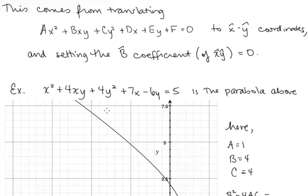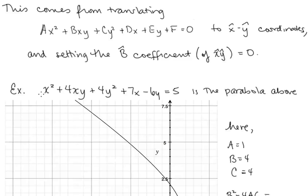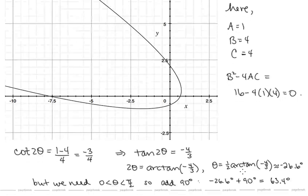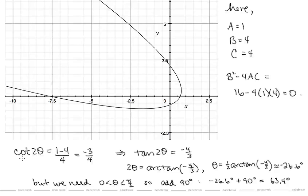For example, x² + 4xy + 4y² + 7x − 6y = 5. Because we have a non-zero xy term, we recognize this conic section is a rotated conic. We have a = 1, b = 4, c = 4. Then b² − 4ac = 0, which matches the parabola case, so this is a rotated parabola. For the angle of rotation, we solve cot(2θ) = (1 − 4) / 4 = (a − c) / b. Taking the reciprocal, tan(2θ) = −4/3.